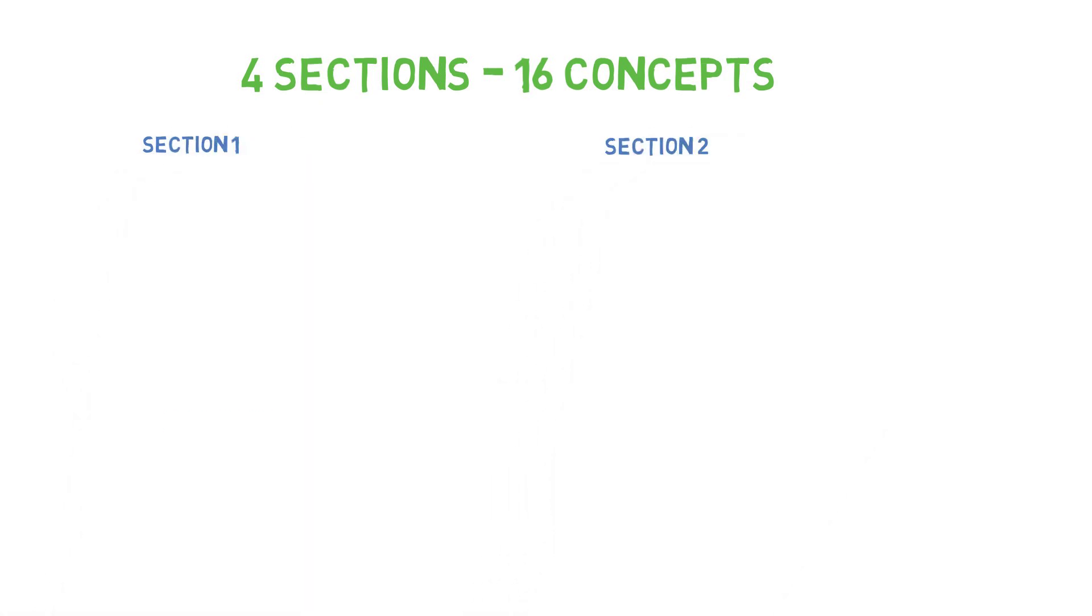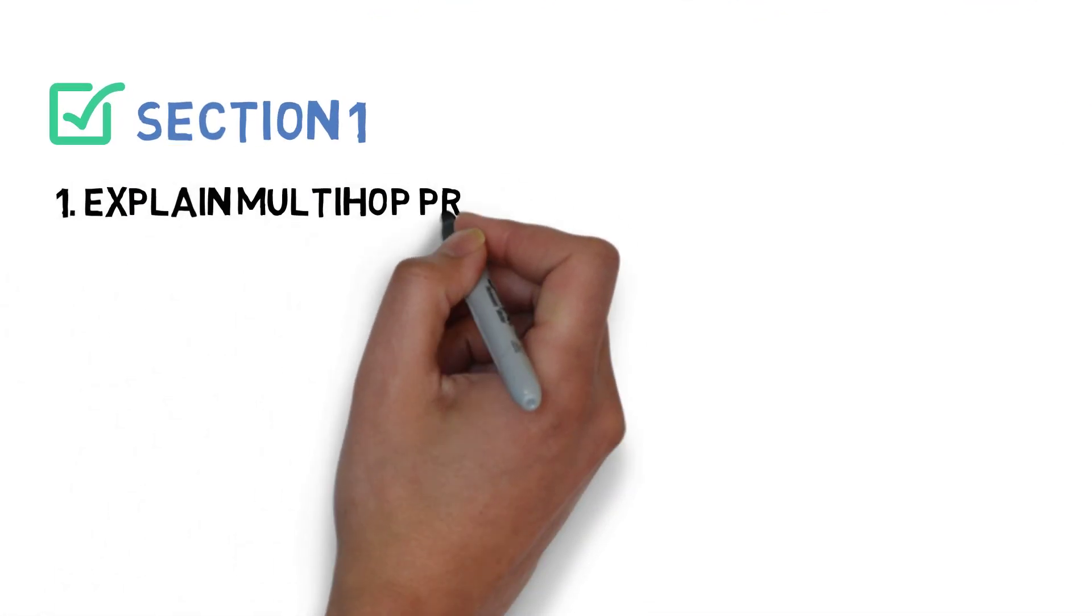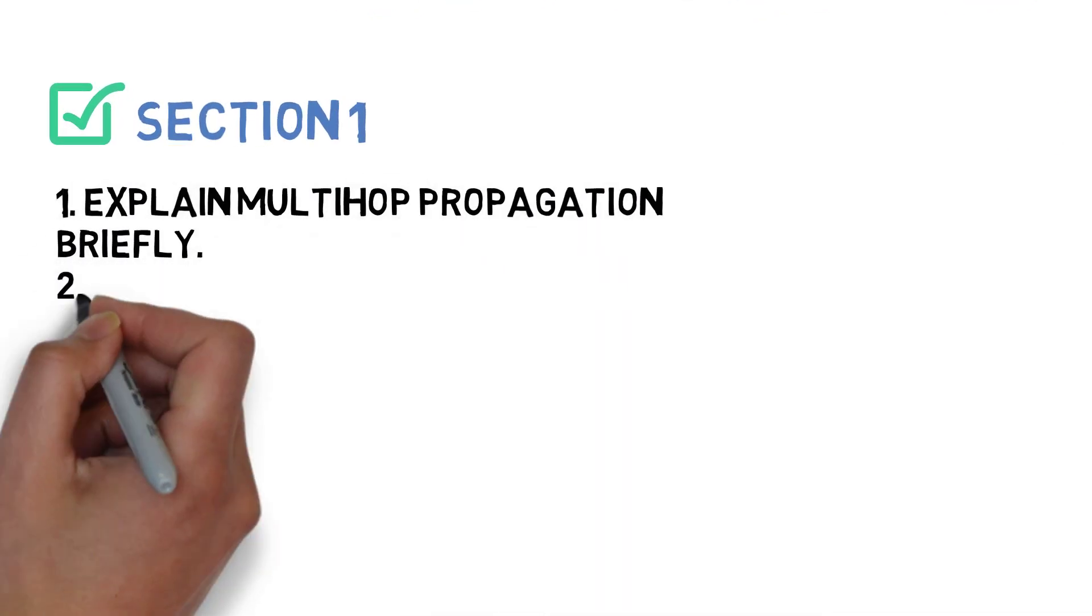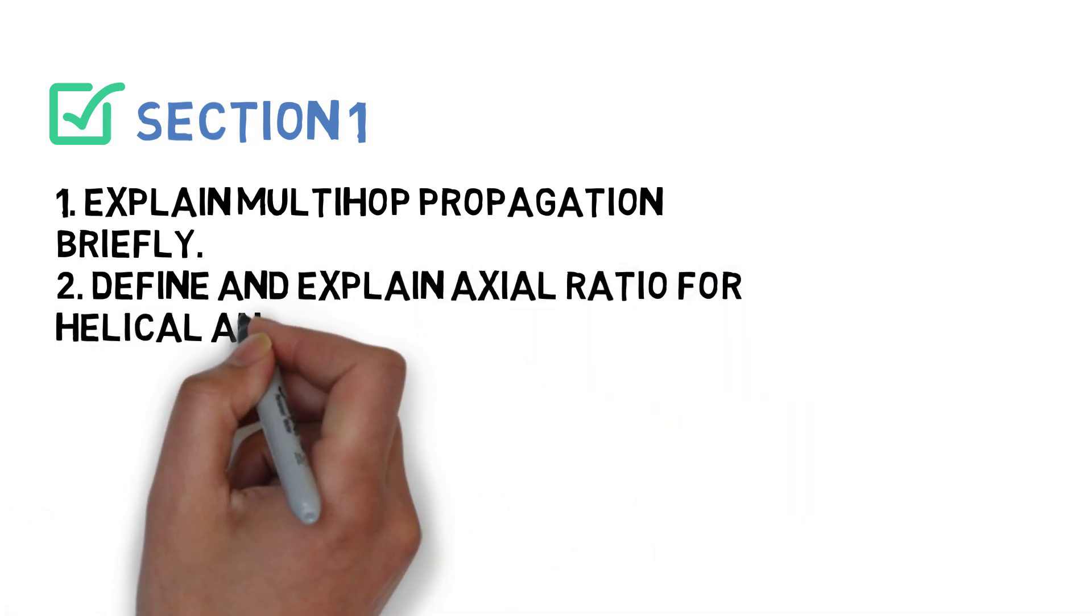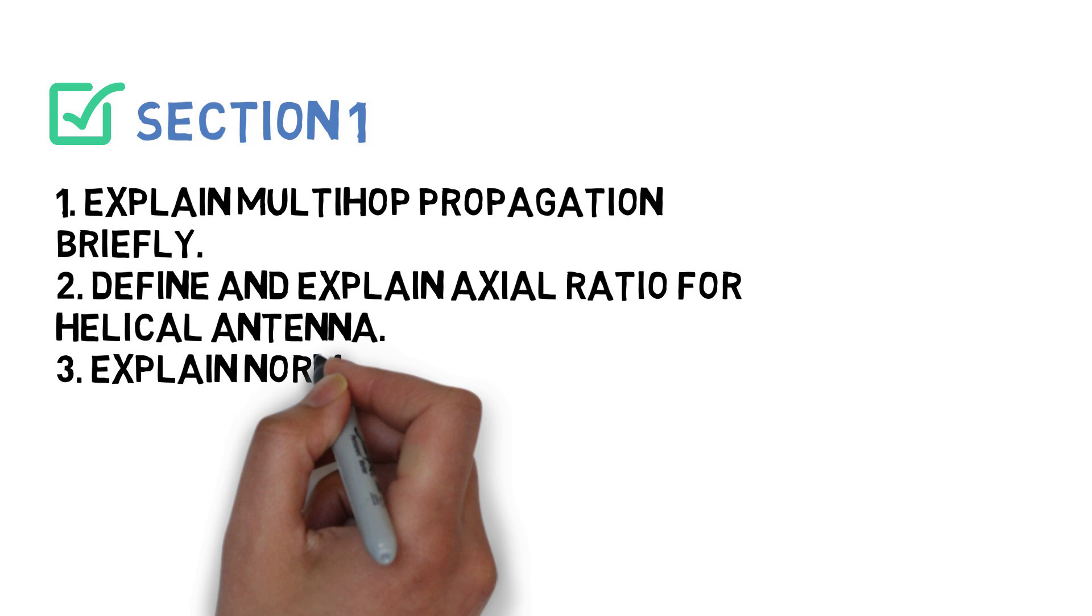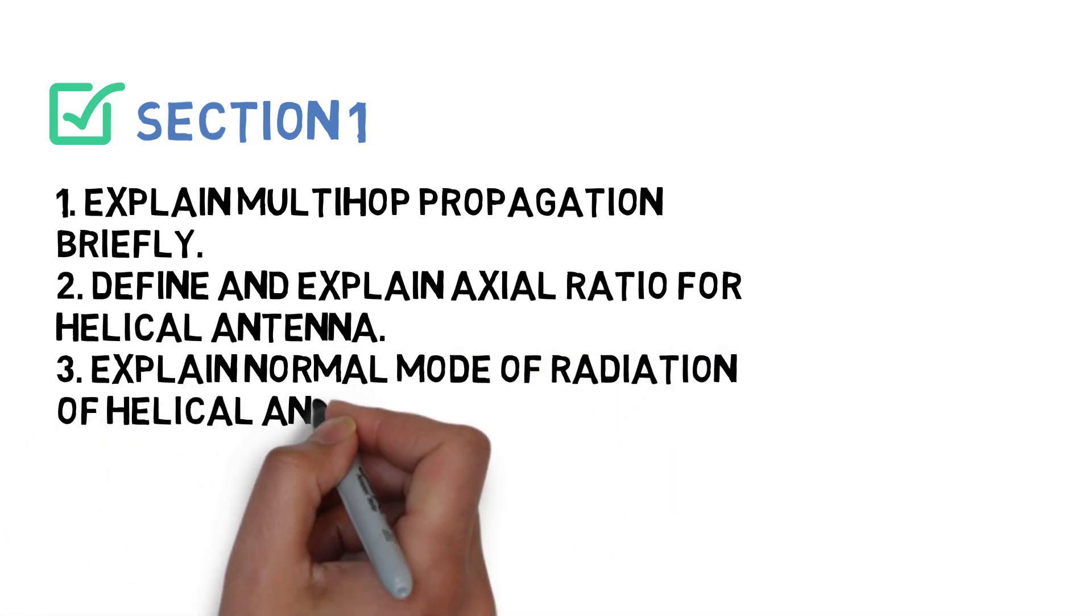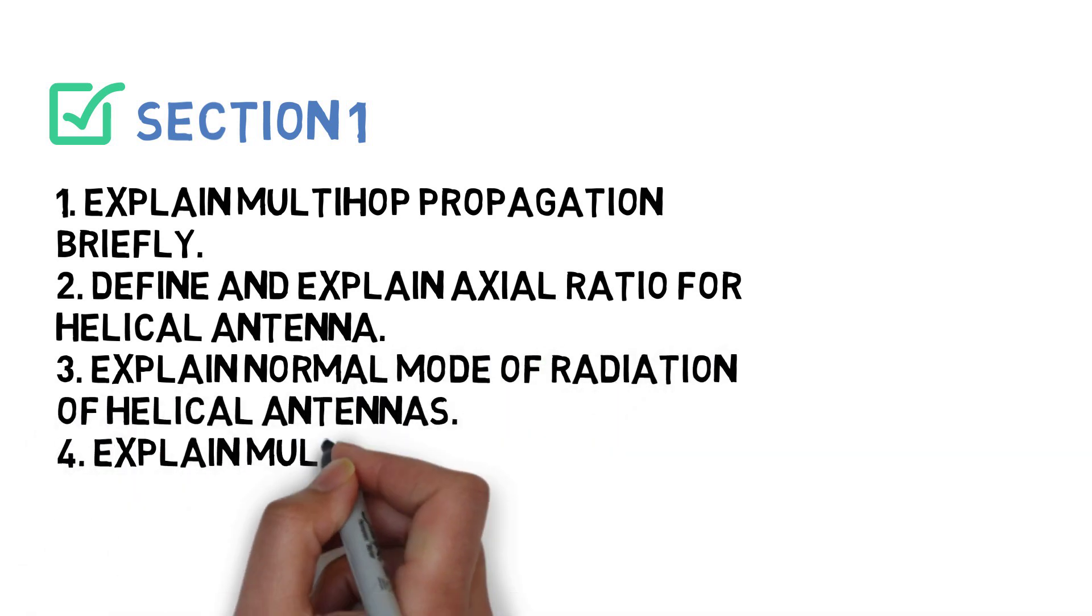First section has 4 questions: Explain multi-hop propagation briefly, explain axial ratio for helical antenna, explain normal mode of radiation of helical antennas, and explain multi-hop propagation with one of its applications. So guys, these four questions you have to do for Section 1.